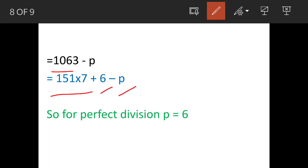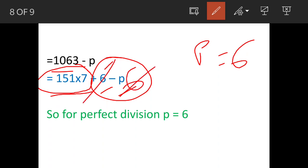Now the next step is that 151 times 7 is perfectly divisible by 7. If we cancel out this 6, then we will get the answer. So to cancel out this 6, if we put the value of p as 6, both the 6 will get cancelled and we will be left with 151 times 7.